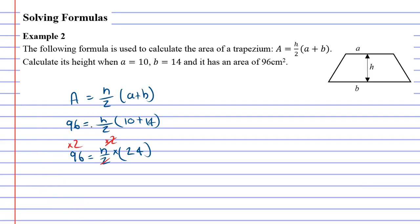I should be able to do this in my head, but I'm not. 96 times 2 is 192, which is h times 24. We don't really need the brackets anymore.